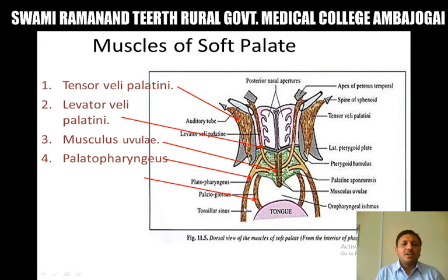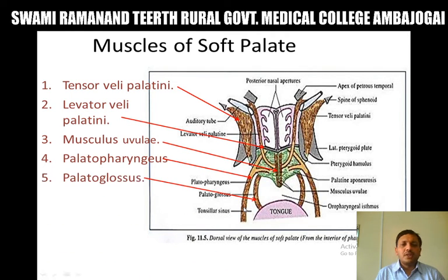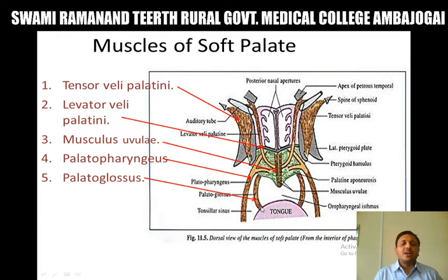The next muscle is the palatoglossus muscle. This palatoglossus muscle arises from the inferior aspect of the palatine aponeurosis and is inserted into the side of the tongue at the junction of the oral and pharyngeal part of the tongue.